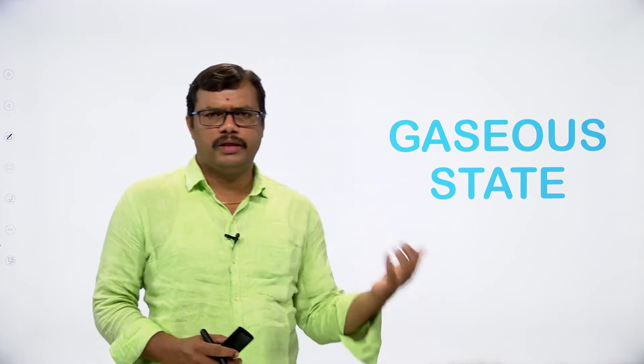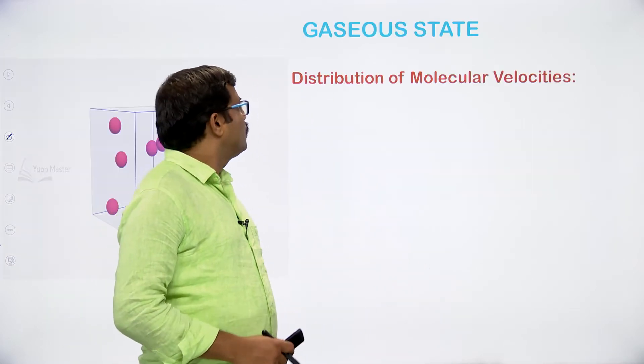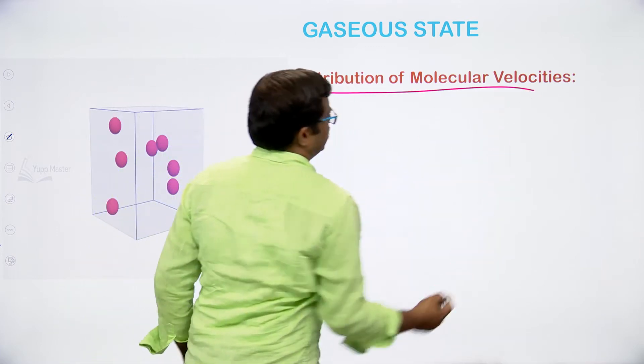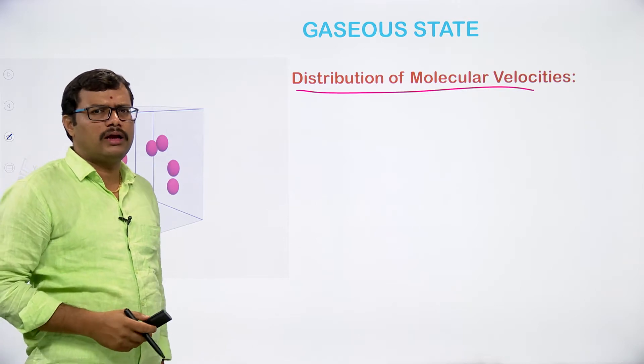In the previous classes, as far as the chemistry syllabus is concerned, we discussed the gaseous state. Over the last week or so, we focused on the kinetic molecular theory of gases, different postulates, and questions at both minus level and advanced level. Today, let us move on to the next topic of the gaseous state — distribution of molecular velocities.